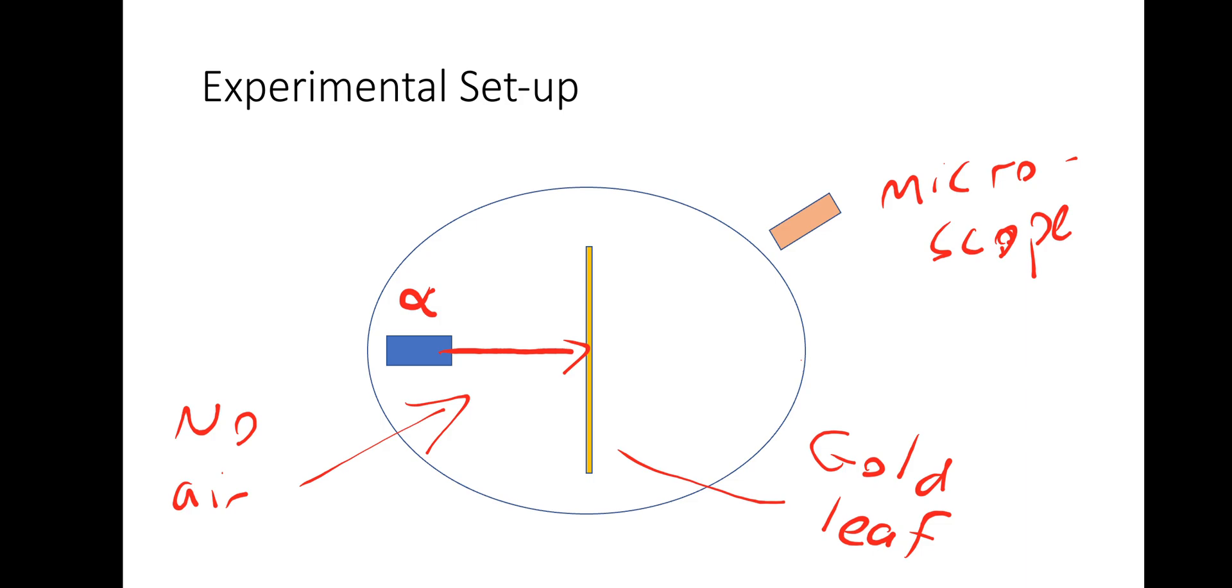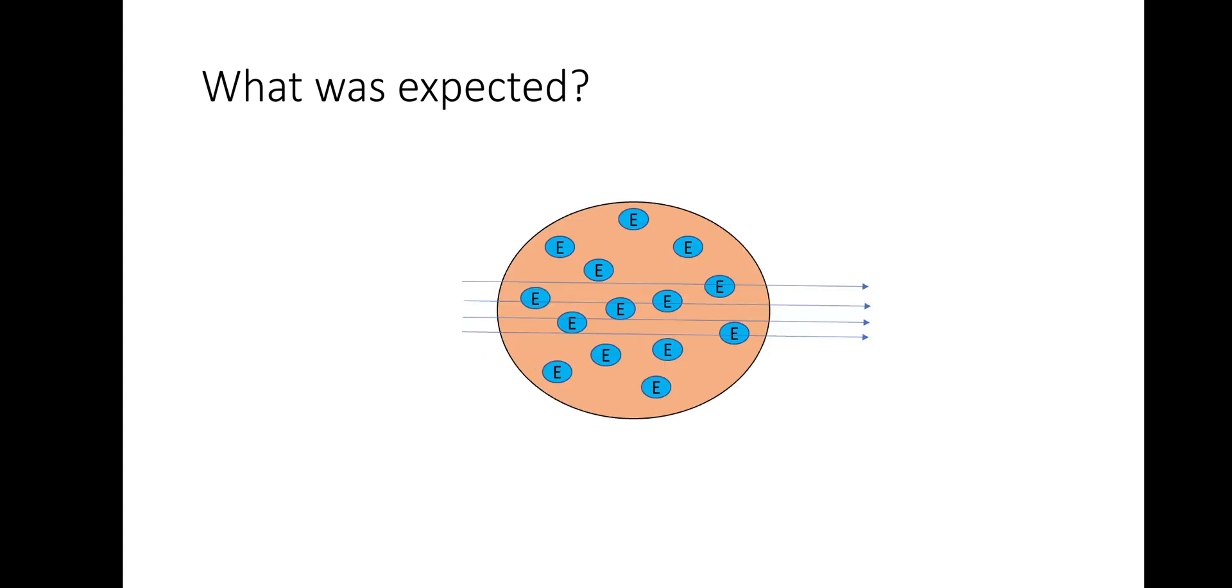So let's have a look at what scientists thought would happen if the plum-pudding model was genuine. So what was expected? It was expected, with the plum-pudding model, that the atoms would simply pass straight through. Now we could get some slight deflections. Some slight deflections would have been warranted. Maybe very slight, such as this. And if this happened, the plum-pudding model would have been realized and would have had strong evidence to suggest that it was indeed true.